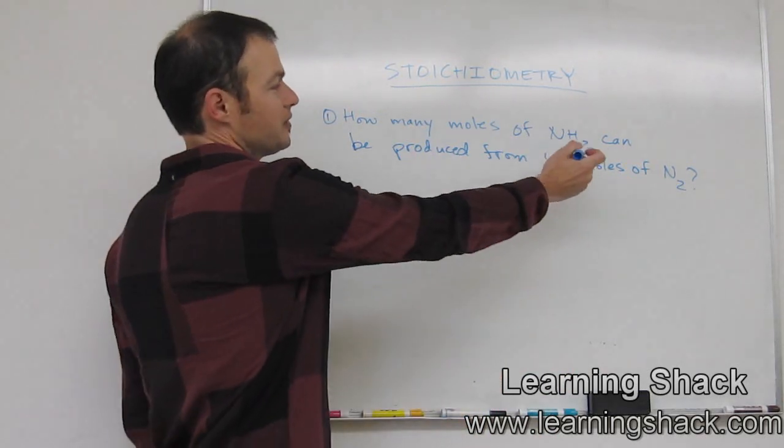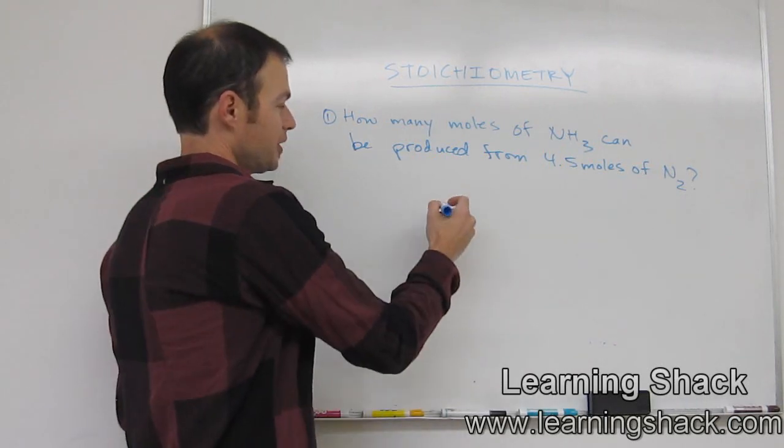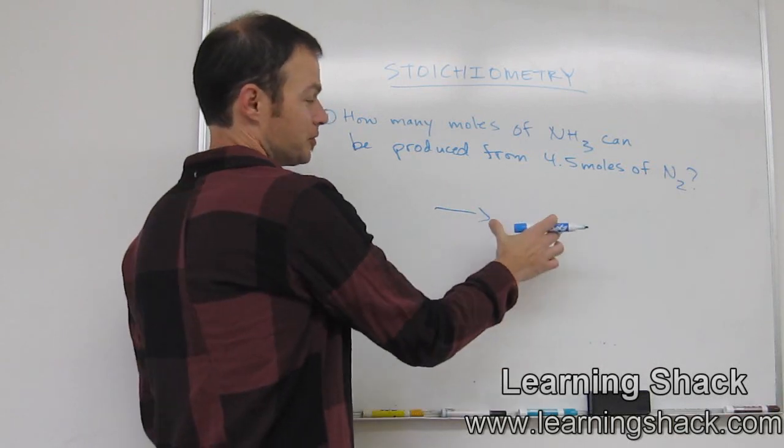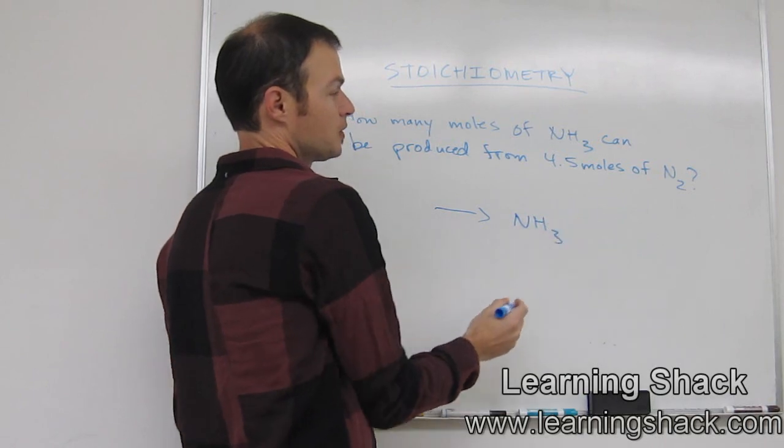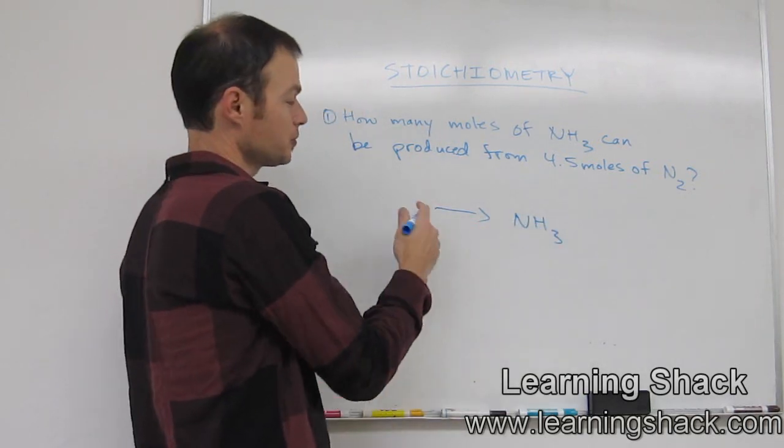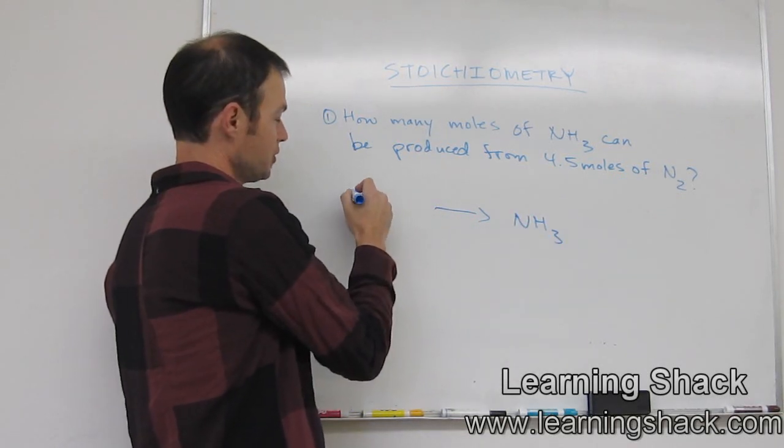How many moles of NH3 can be produced? Produced always means we have an arrow, and the produced quantities are going to be on the other side of the arrow, always on the right side. So over here is going to be NH3. And then it says from the N2. So the N2 is what is going to make the thing that's being produced, so that's going to show up over here.